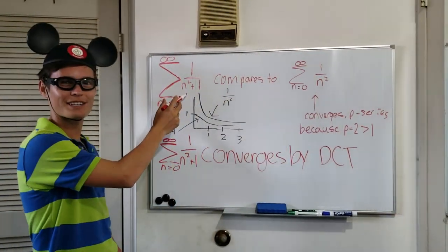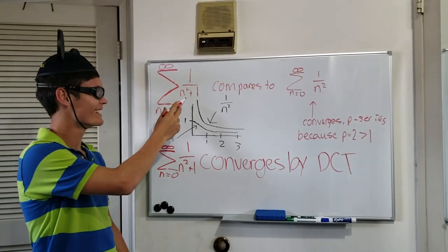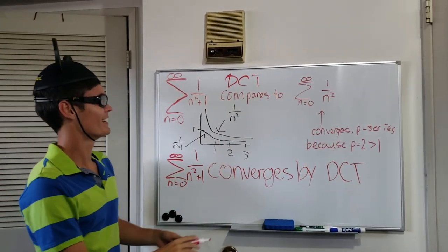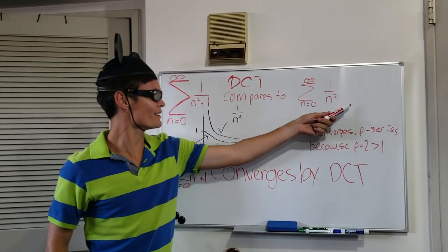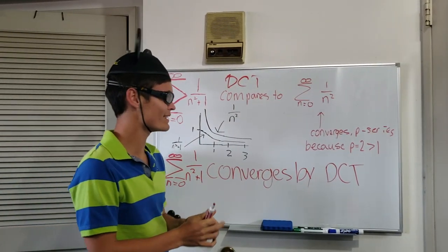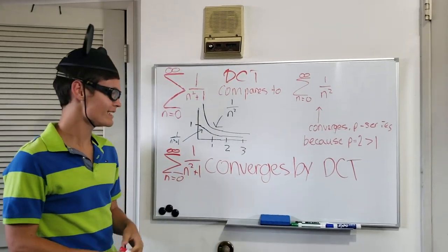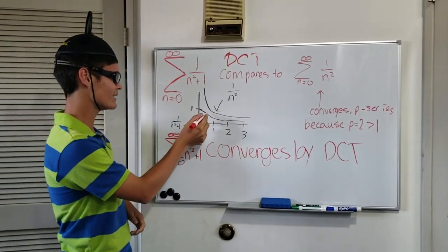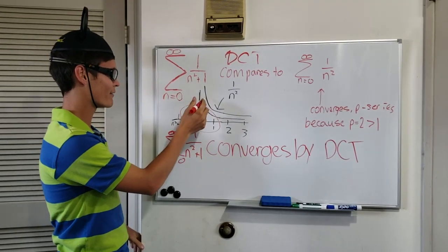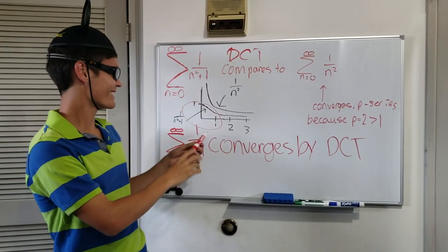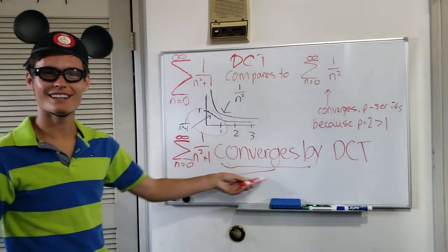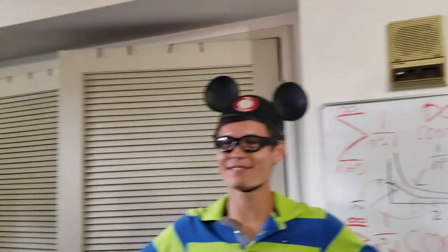So if you look at this series and you can use DCT, compare it to the following, which converges by these series. And since our series is the smaller one when you look at its graph, then our series converges, and we can have a good laugh.